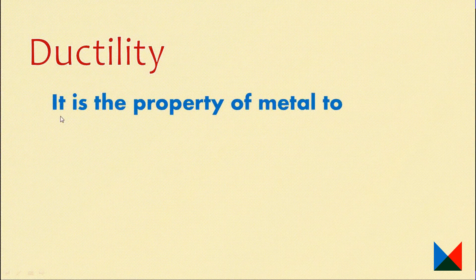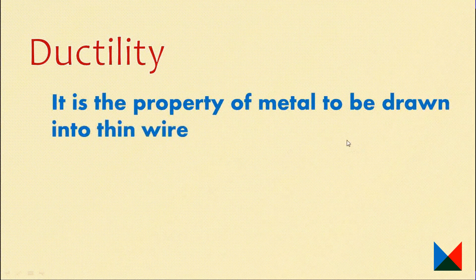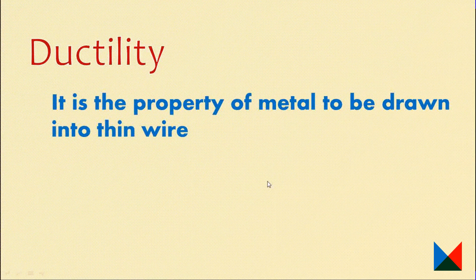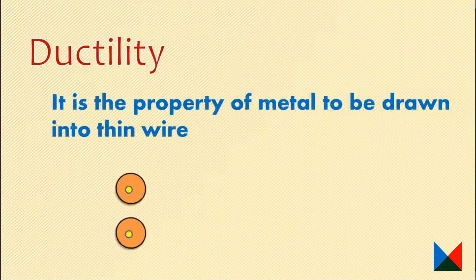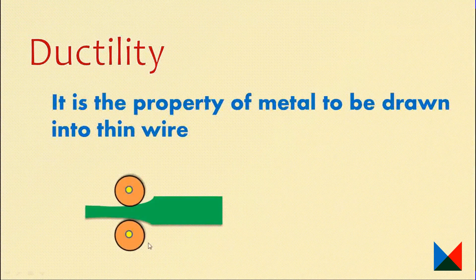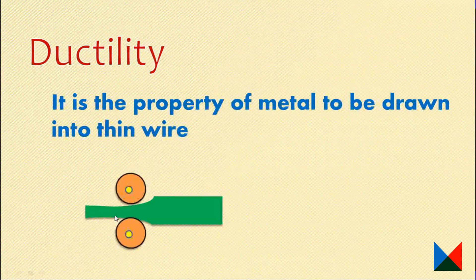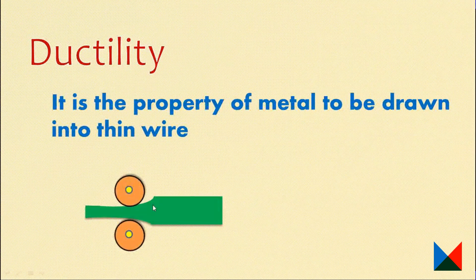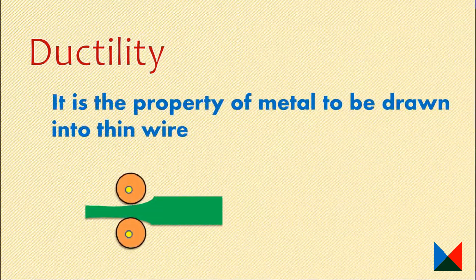Ductility is the property of metal to be drawn into thin wire. To demonstrate this property, we need to insert two rollers, and we adjust the thickness and diameter to produce thin wire. So this property is ductility — the material is drawn into thin wire using two rollers.